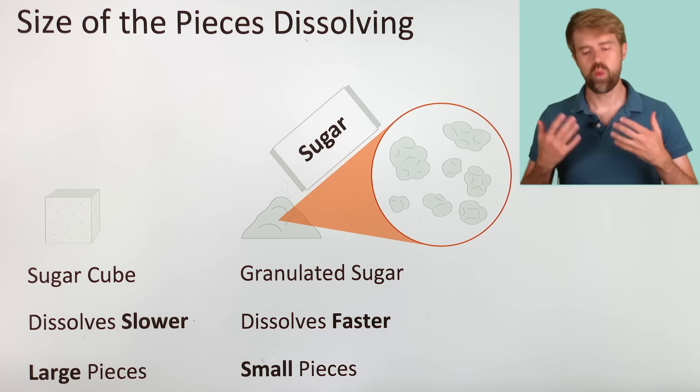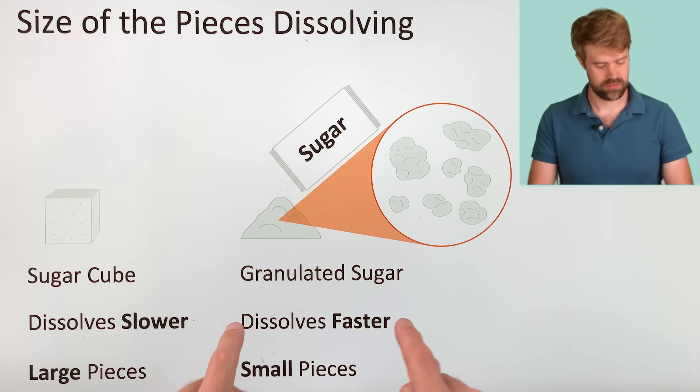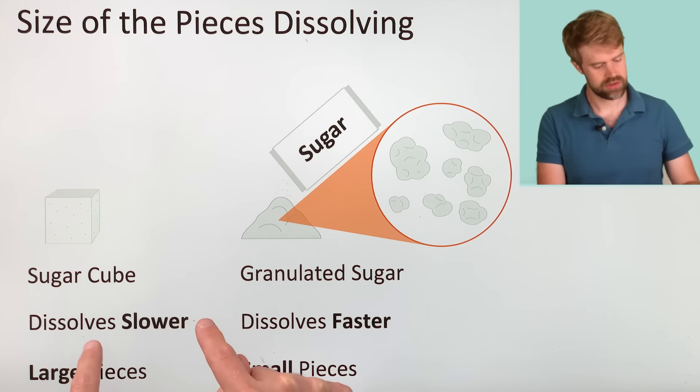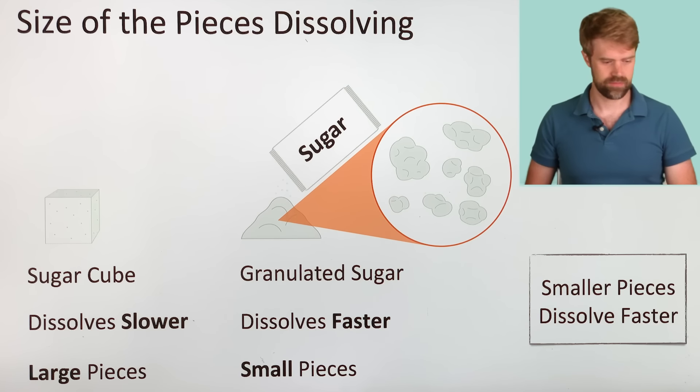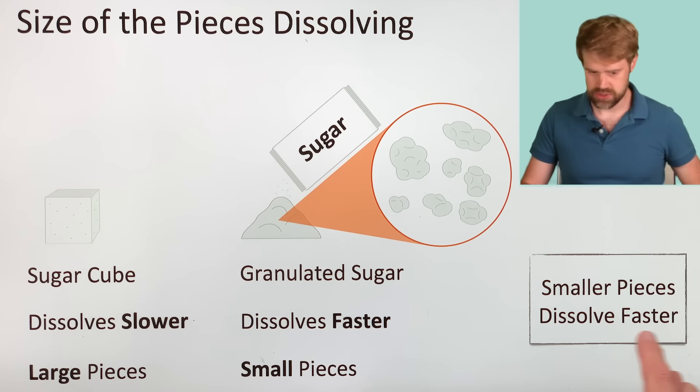So what's the relationship between these sizes and the rate of dissolving? The smaller pieces dissolve faster. The larger pieces dissolve more slowly. So the smaller the size of the pieces, the faster the substance dissolves. That's the main point.